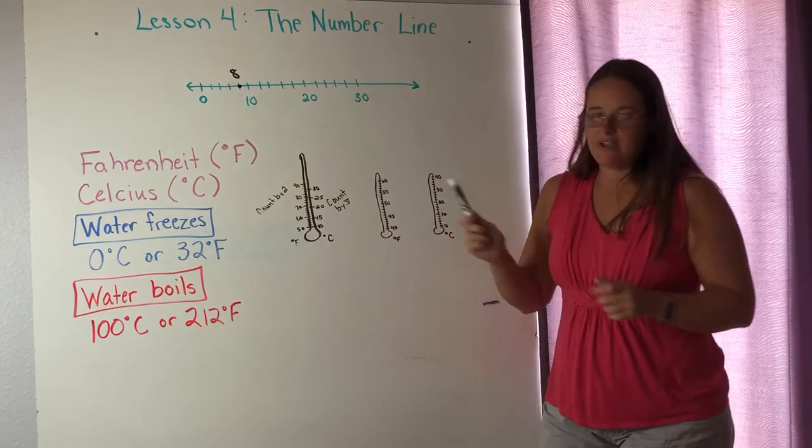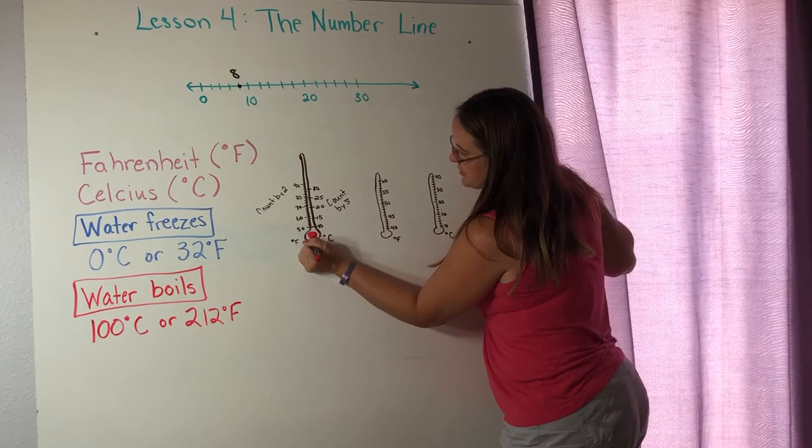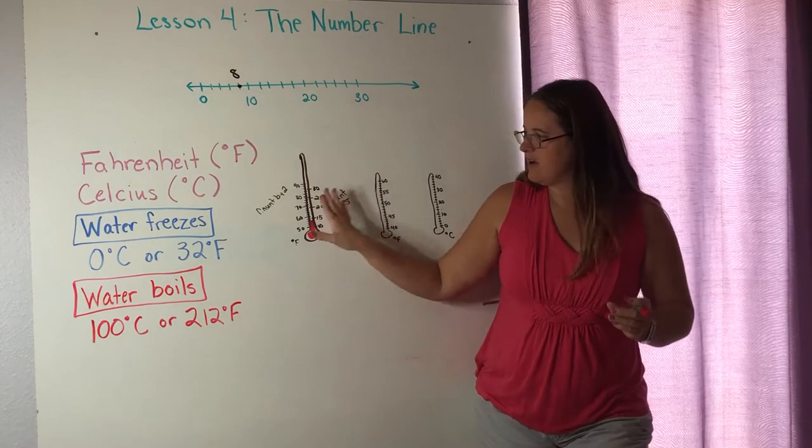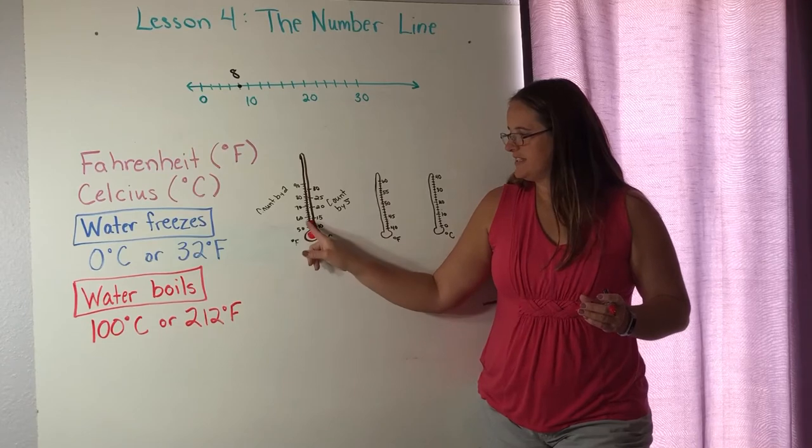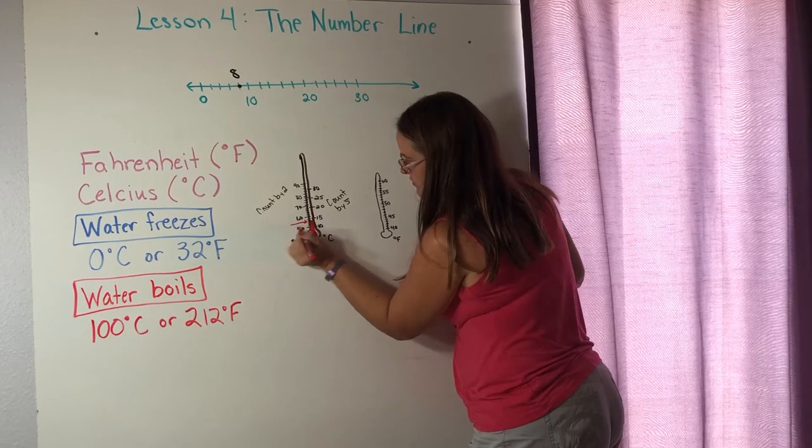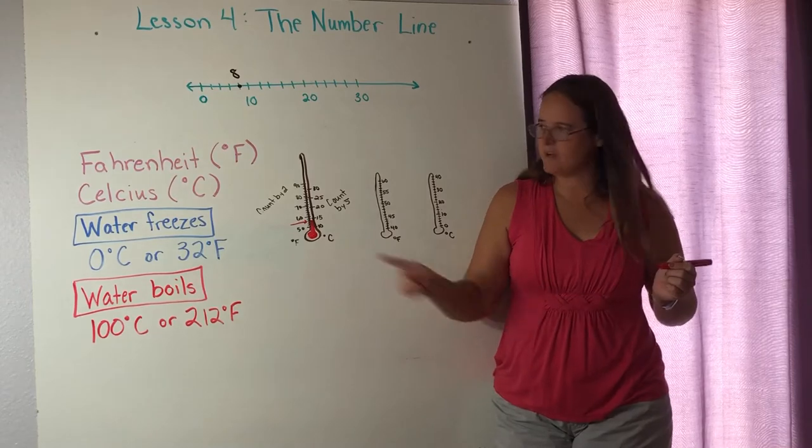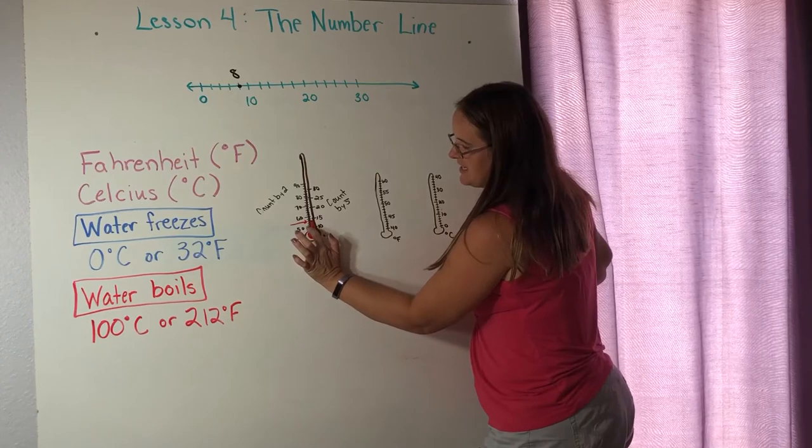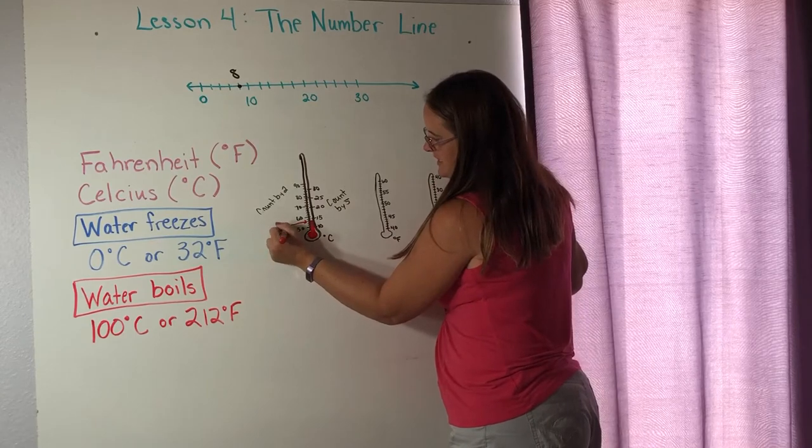All right. So if I want to know what temperature it is, we've got to color in our mercury here. Let's say right there. We have to look, and now I'm just going to talk about the F side here for a minute. We're going to look over here and say, well, it's on this notch right there, and so it's somewhere between 50 and 60, and what am I counting by? Two. I'm counting by two. So let's count up. We've got 50, 52, 54, 56. So this would be 56 degrees.